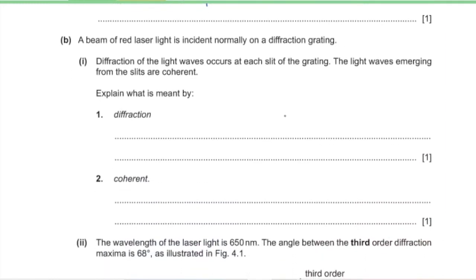Part B: a beam of red laser light is incident normally on a diffraction grating. Part 1: diffraction of light waves occurs at each slit. The light waves emerging from the slits are coherent. Explain what is meant by diffraction — diffraction is the spread of waves as they pass through a slit or around an obstacle. Coherent waves are waves that have a constant phase difference.